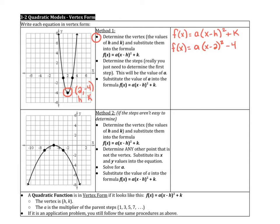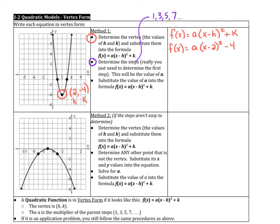The second step is to determine the steps. And you really just need to determine the first step because the steps go 1, 3, 5, 7 usually. And the a value is what you multiply the steps by. So if you just take a look at the first step. The first step is we go over 1, up 3 on either side.